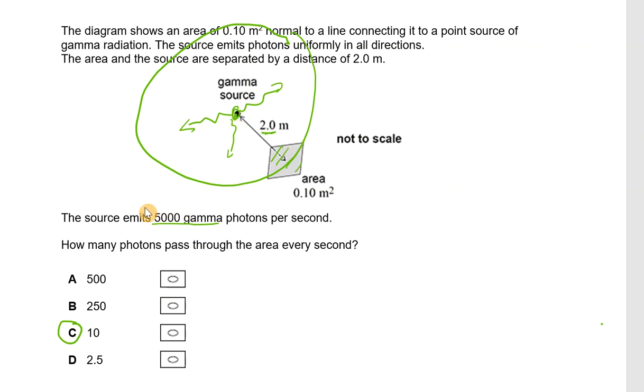Now, all 5,000 of the photons are going to go through that sphere, but the number that will go through that area is the fraction of that area of the total sphere. So if I work out the area of the sphere and then divide this area by the area of the sphere, multiply by 5,000, I'm going to find the number that go through that area.